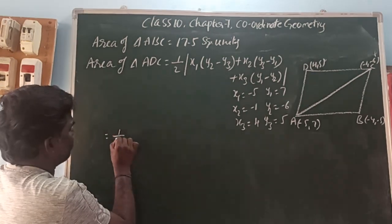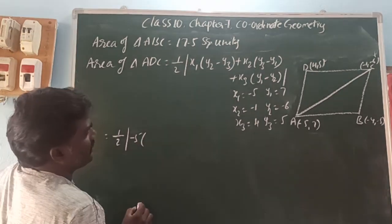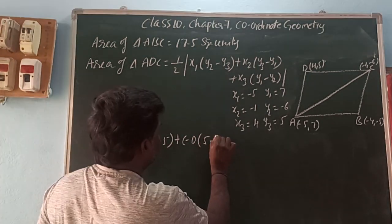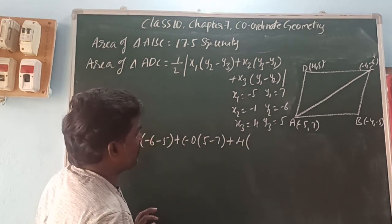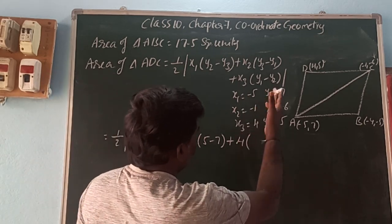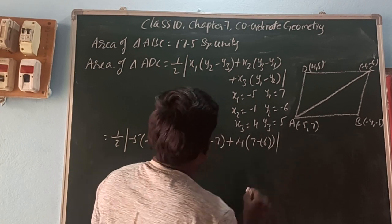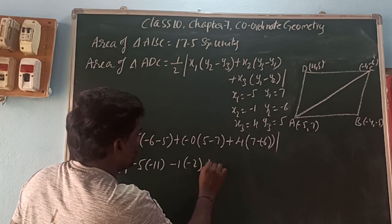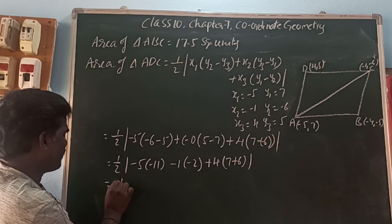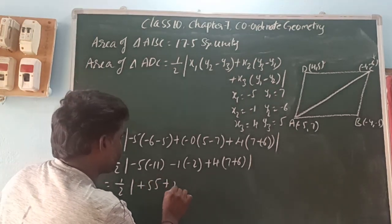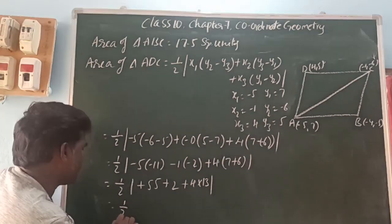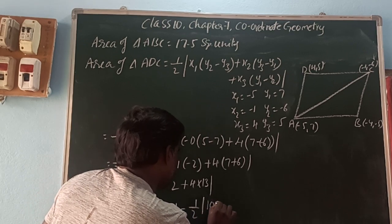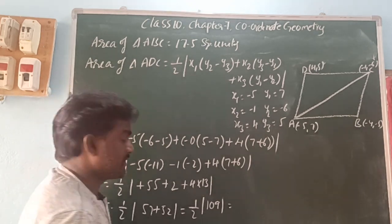Substituting: (1/2)|(-5)((-6) − 5) + (-1)(5 − 7) + 4(7 − (-6))| = (1/2)|(-5)(-11) + (-1)(-2) + 4(13)| = (1/2)|55 + 2 + 52| = (1/2)(109) = 54.5.